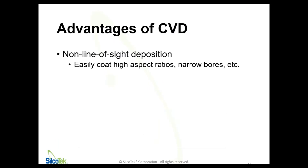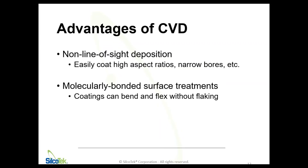With that in mind, there are several advantages of the CVD process that simply are not attainable with typical coating methods. The number one advantage is non-line-of-sight deposition. Because we're not spraying something out of a gun, anything that's in that vacuum chamber is going to be uniformly and completely coated. We can coat very tight channels and tortuous pathways that move and change in a lot of different directions. We're very familiar with small tubing, and you can actually bend the tubing after being coated and not damage the coating.